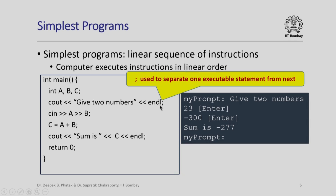Note also that the semicolon is basically used to separate one executable statement from the next. You could put two executable statements on the same line — you do not need to break the line — but as long as you put a semicolon between them, it is clear that the statement to the left of the semicolon will be executed first and then the statement to the right of the semicolon.